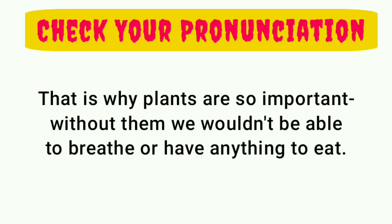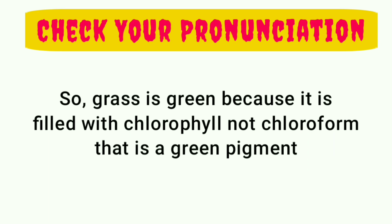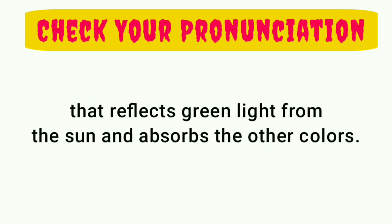So, grass is green, because it is filled with chlorophyll, not chloroform — that is a green pigment. That reflects green light from the sun, and absorbs the other colors.